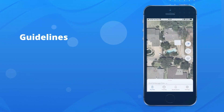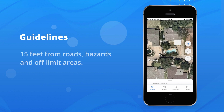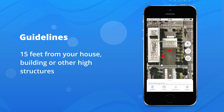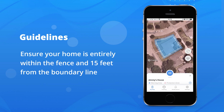There are a few important guidelines to follow when creating your fence. Keep your boundary at least 15 feet away from any hazards or other areas you wish your dog to avoid. Also, keep boundaries at least 15 feet from your house and any other high structures that may interfere with the GPS signal. When including your home within a fence, make sure your entire home is within the fence and at least 15 feet from the boundary line outside.